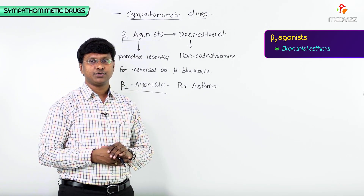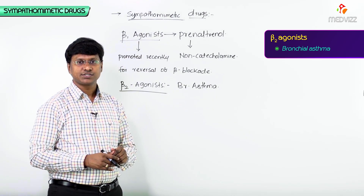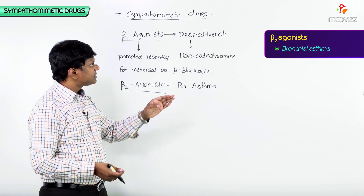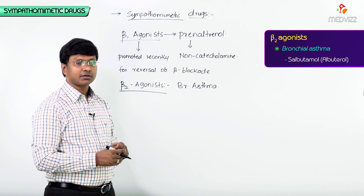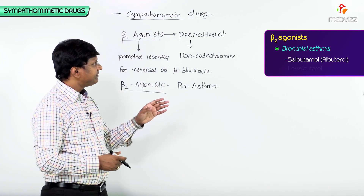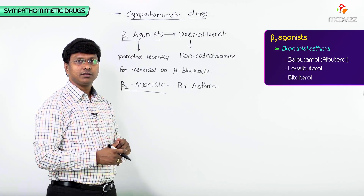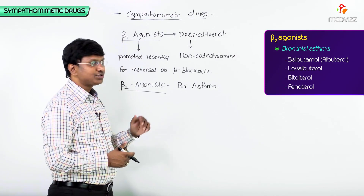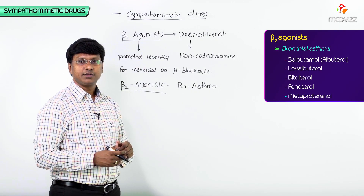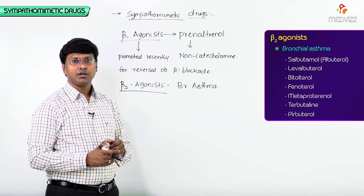What are the examples of these beta2 agonists? We have many drugs — short acting as well as long acting. The examples are: salbutamol, also called albuterol; levalbuterol; bitolterol; fenoterol; metaproterenol; terbutaline; and pirbuterol.